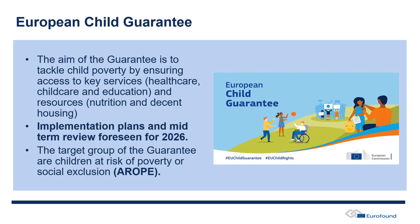Every two years there is a report on progress in the so-called implementation plans. The first batch of reporting took place in March this year, and implementation reports are available on the European Child Guarantee Commission website. The next batch of implementation plans is foreseen to be submitted in 2026, and also in 2026 there will be a mid-term review of the Child Guarantee — five years after the approval of the recommendation — to see whether the objectives are being achieved.